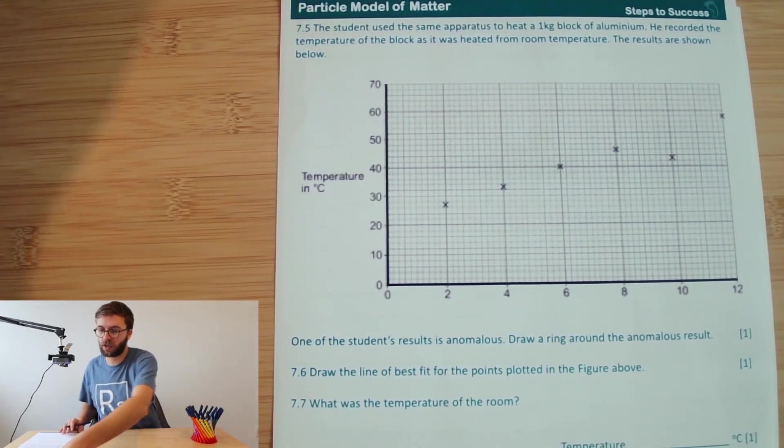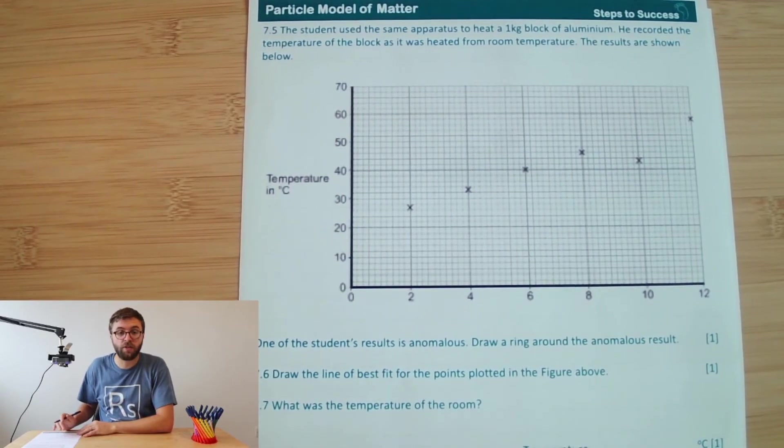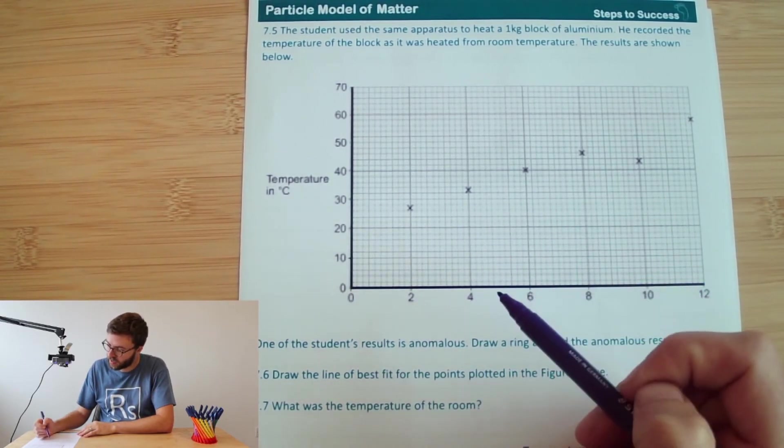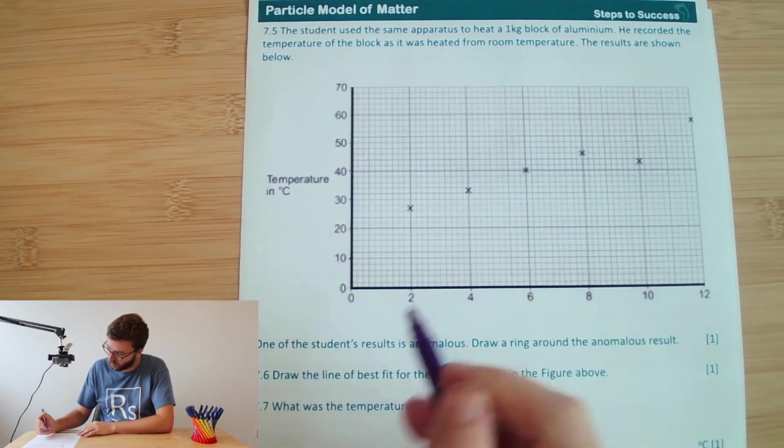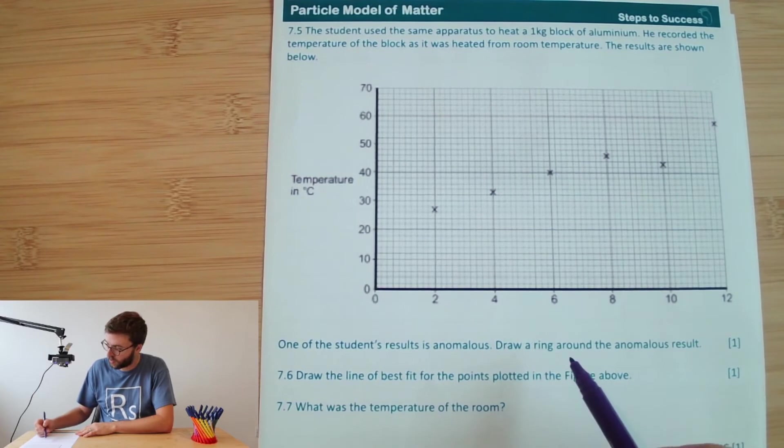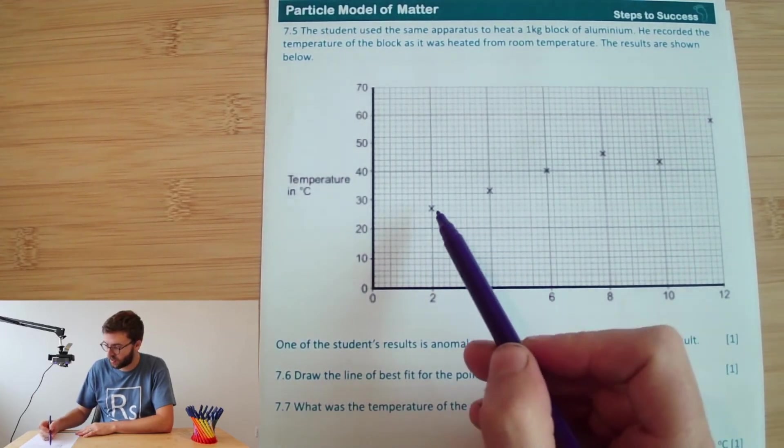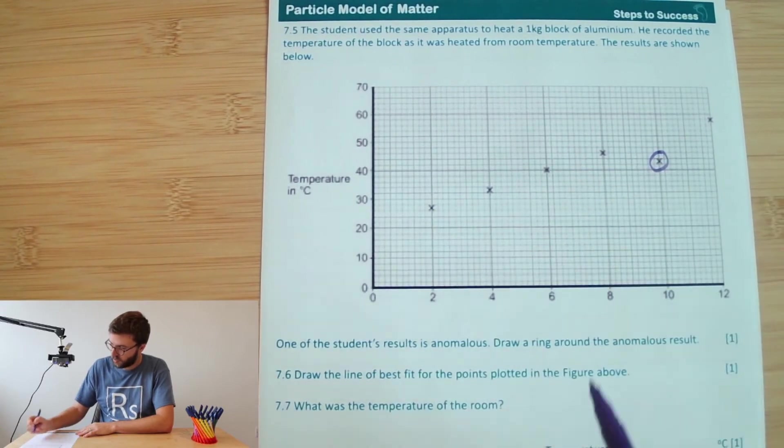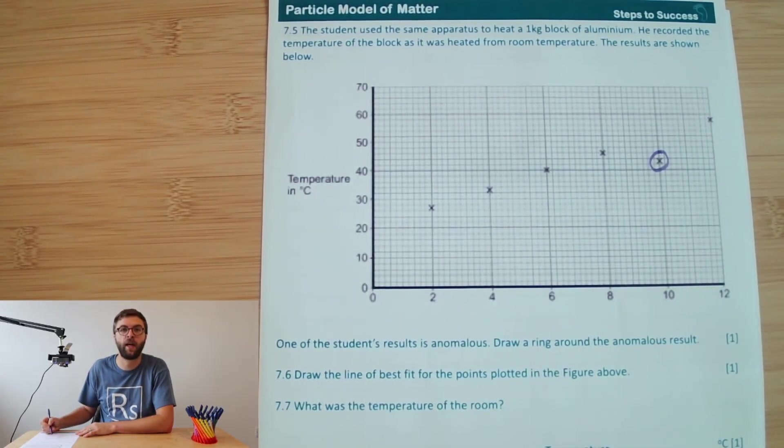Okay, the question continues. So the student used the same apparatus to heat a kilogram block of aluminium and recorded the temperature of the block. As it was heated from room temperature, the results are shown below. One of the student's results is anomalous. Draw a ring around the anomalous result. And it stands out there. You can see all of these lines here in a lovely straight line. And that this one here doesn't follow that pattern. So that's going to be our anomalous result.